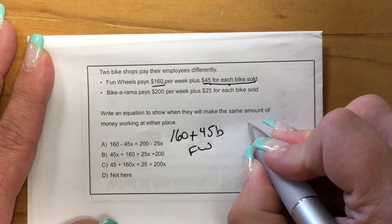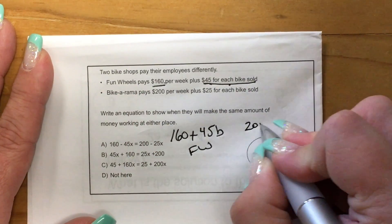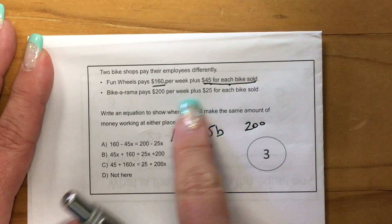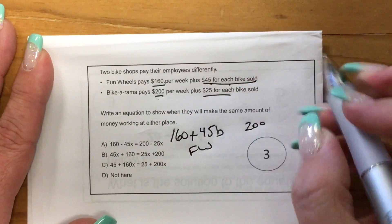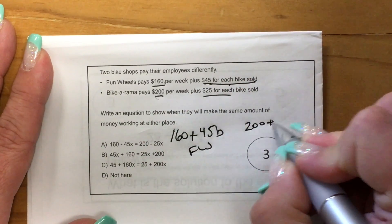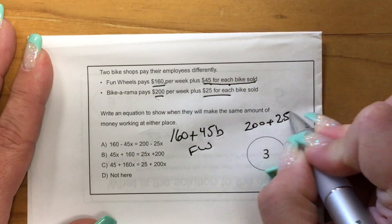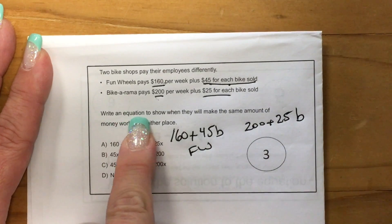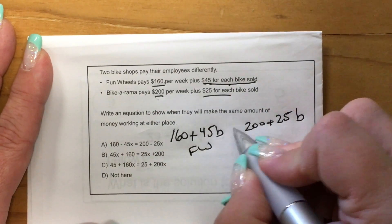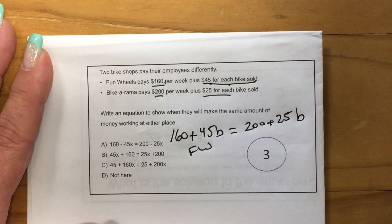Bike-O-Rama is $200 plus $25 for each bike. And it's an equation, so they're going to be equal to each other.